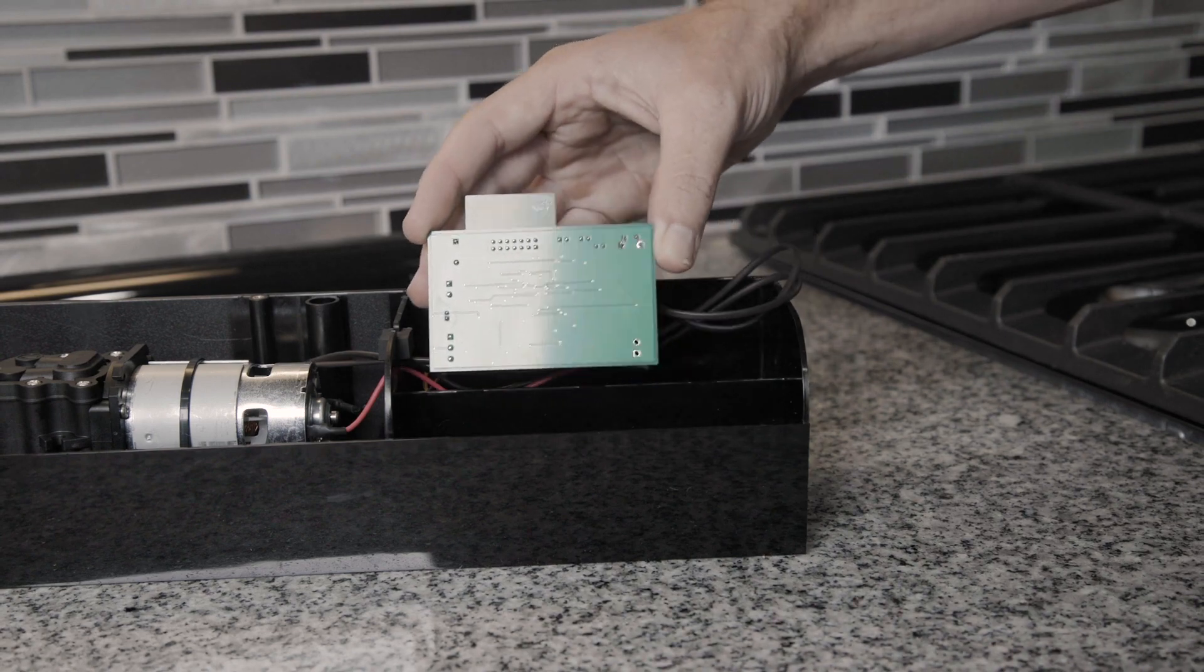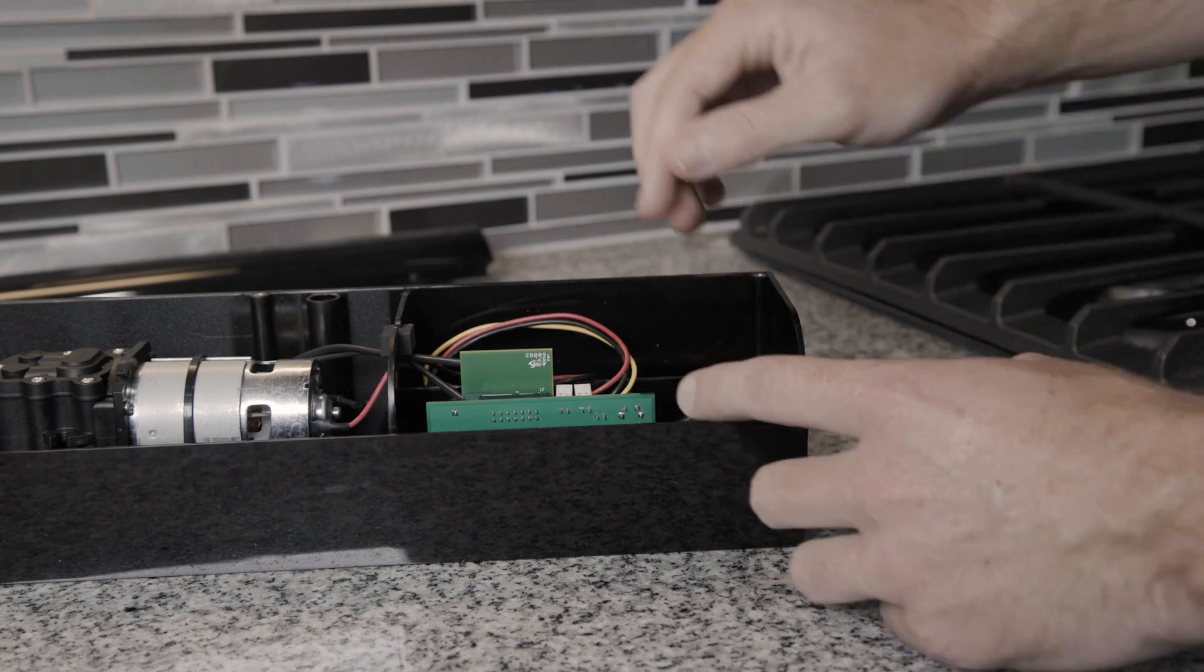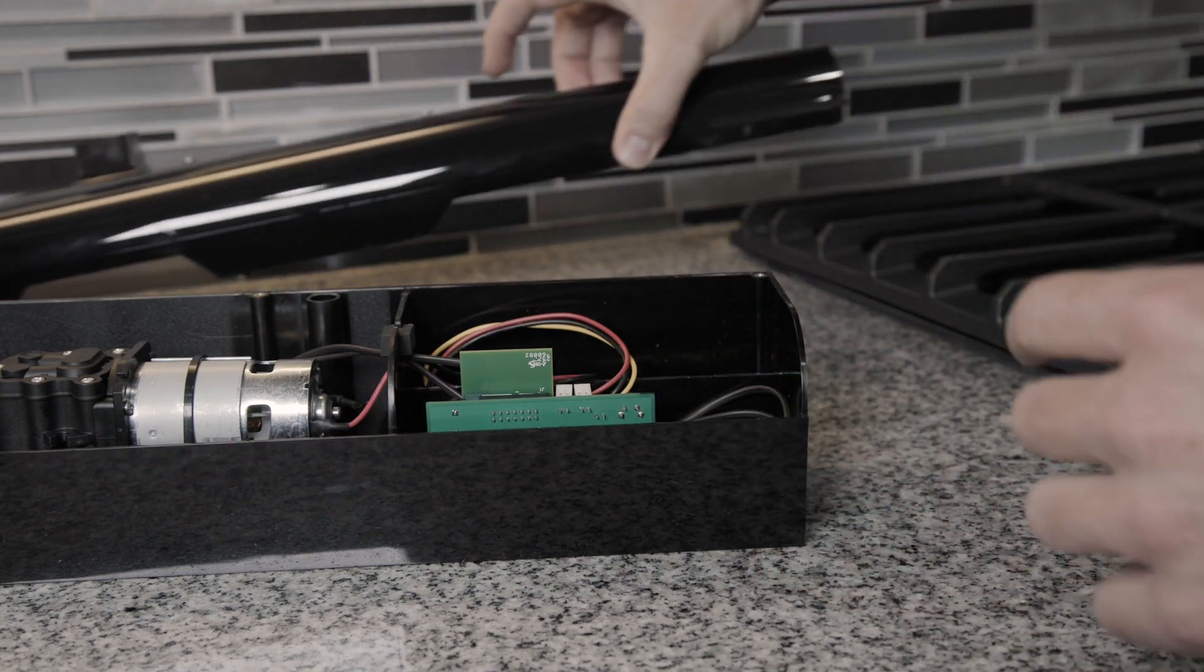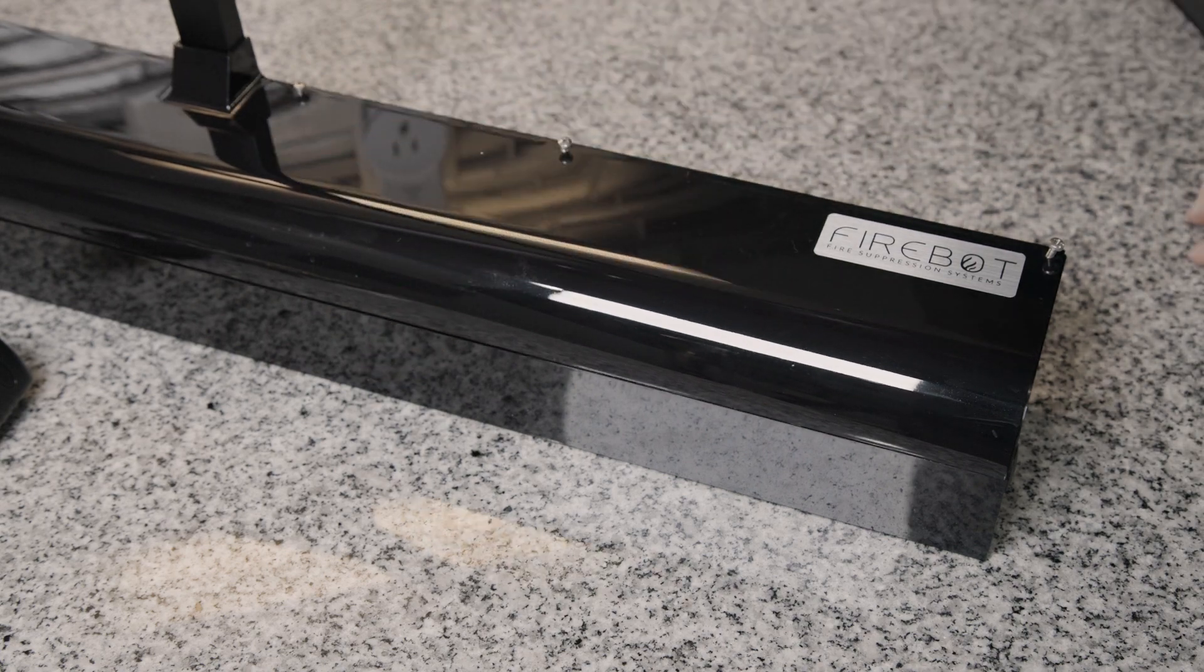Reinsert the circuit board back into the FireBot housing. Tuck the wires in. Place your cover back onto the FireBot. And now we're ready to go to the next step of installing the solenoid.